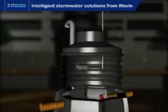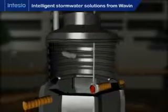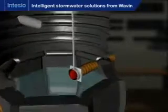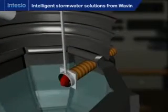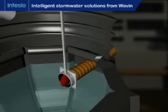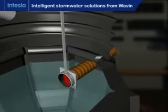The system has a sampling shaft that allows access to the rainwater for testing, and there is also a shut-off valve if required.